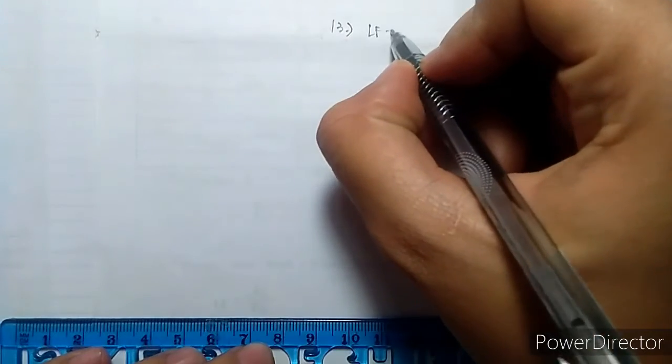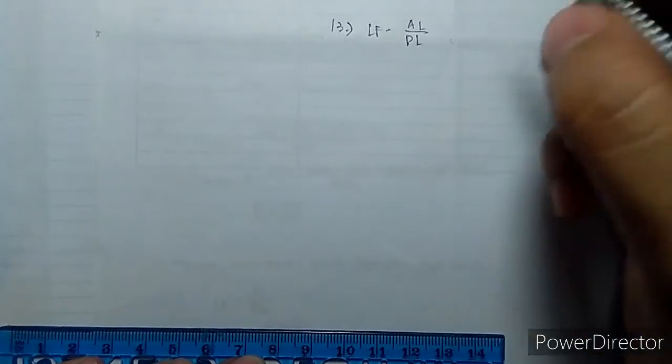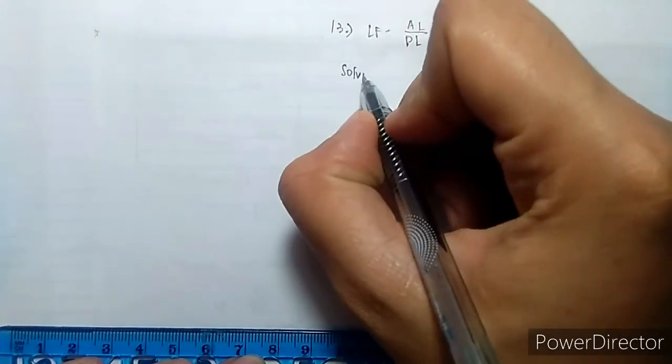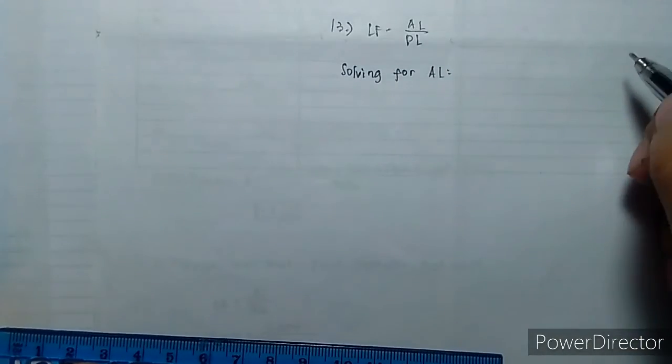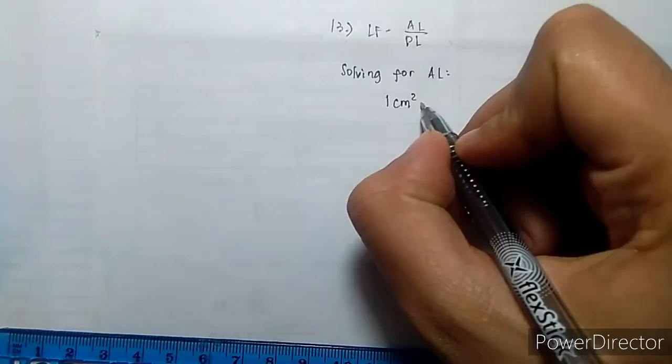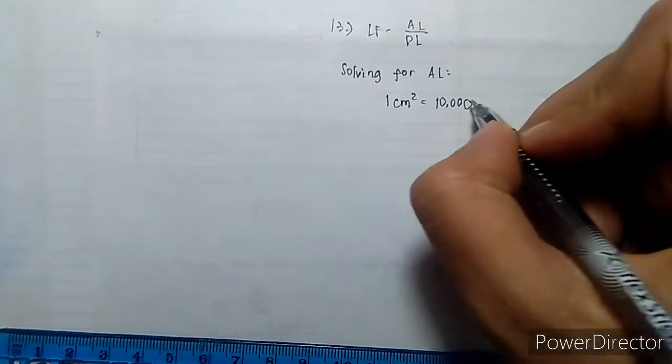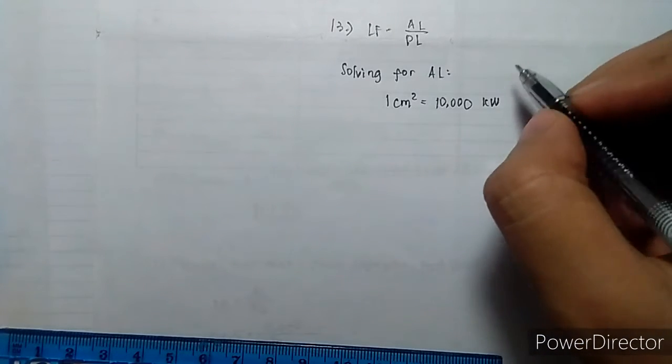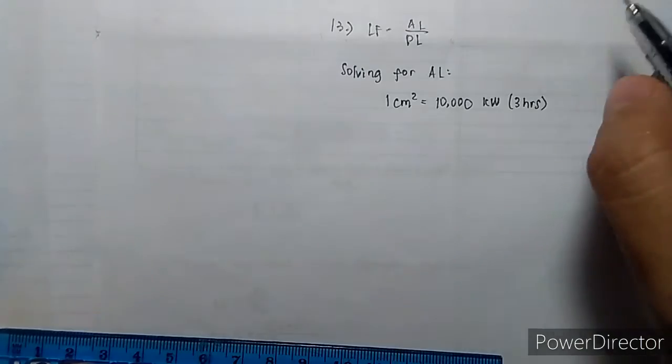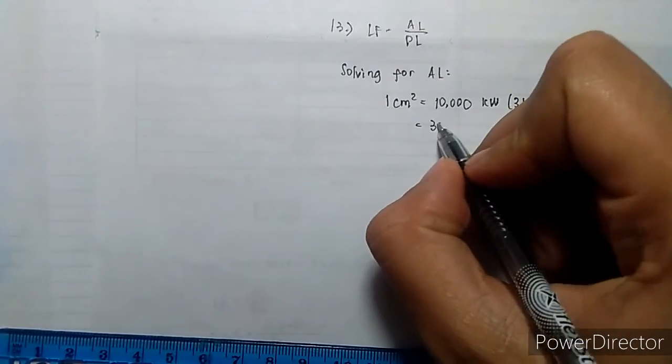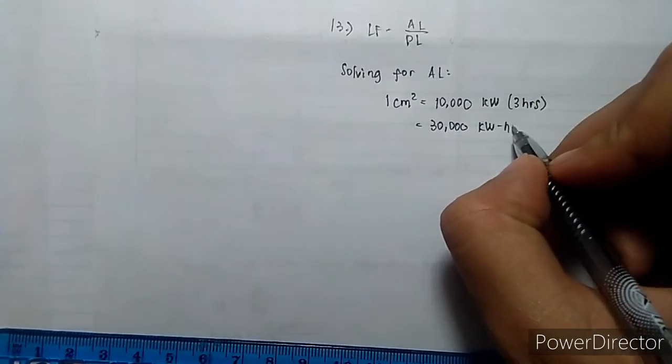LF is equal to the average load over the peak load. Solving for the average load, 1 square centimeter is equal to 10,000 kilowatt times 3 hours. The energy produced is equal to 30,000 kilowatt hours.